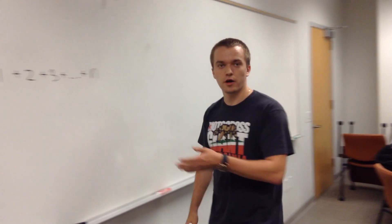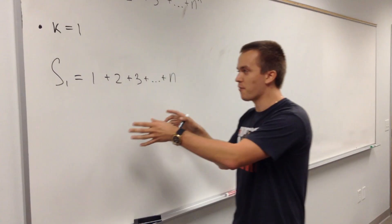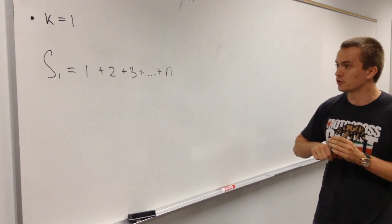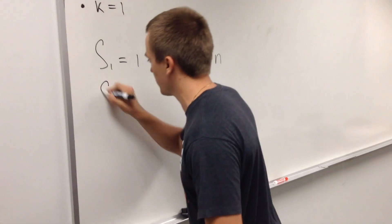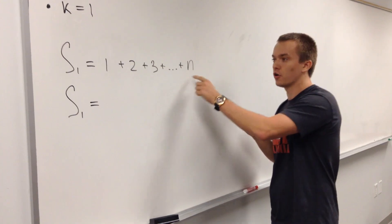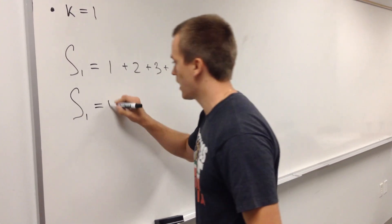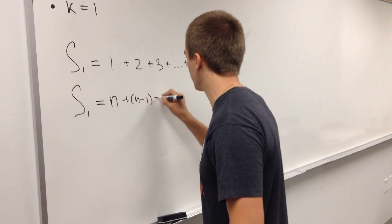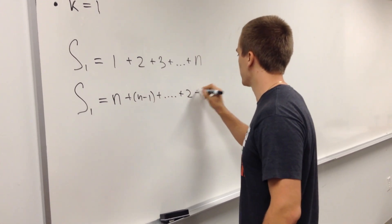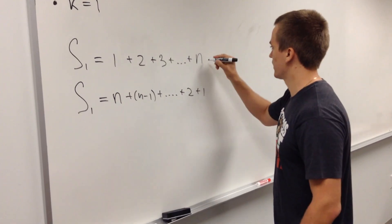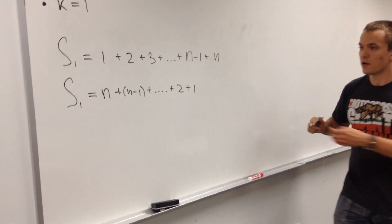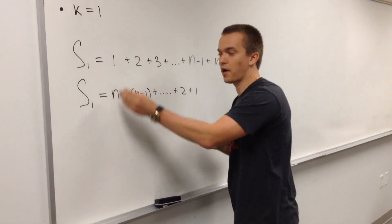In the case when k equals one, I will prove this formula using one really interesting trick. What I'm going to do: I will write the same sum S, but here I will change the order of my terms. I will write it as n plus n minus one plus ... plus two plus one. So I write n minus one plus n. And then I'm going to add the two sums together.